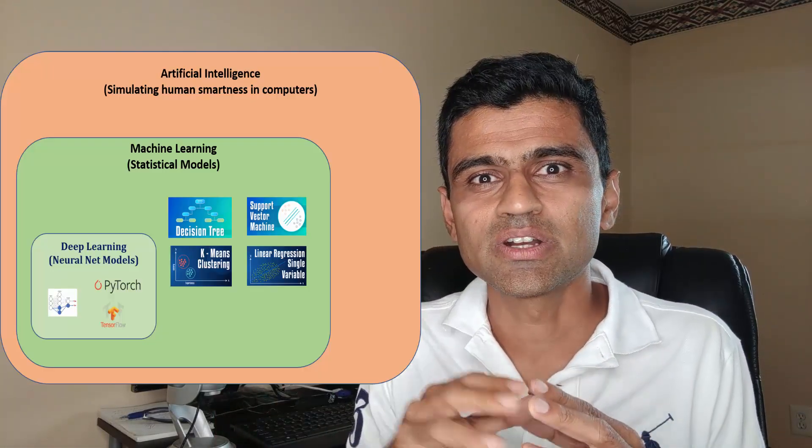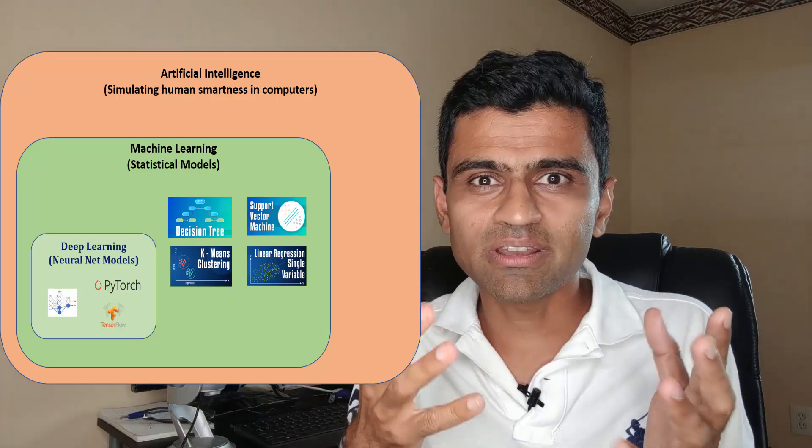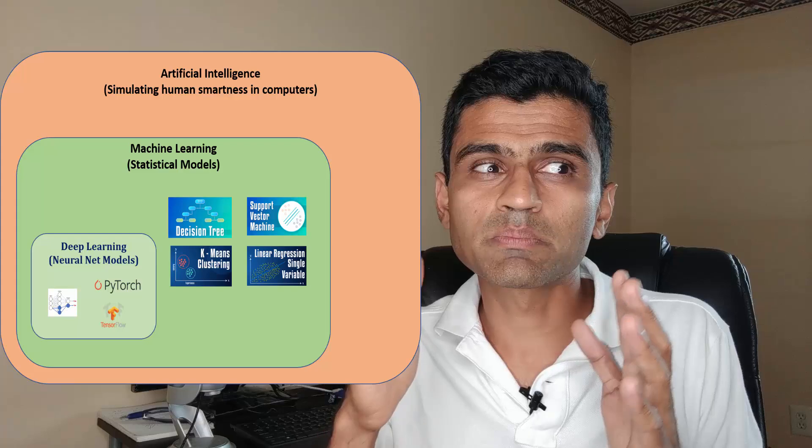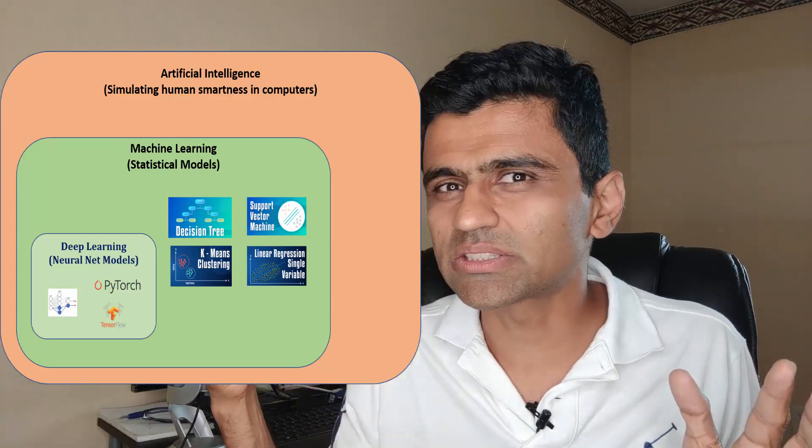Artificial intelligence is an even broader term. Machine learning is actually part of artificial intelligence. So if you are doing machine learning, it means you are doing AI, but AI is machine learning plus something else. What is that?